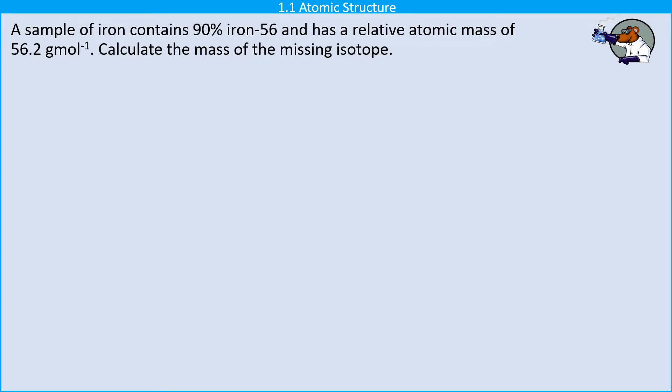In this exam question we're looking at a sample of iron that has two different isotopes in it and we've been given the relative atomic mass and we're trying to work out the mass of the missing isotope.